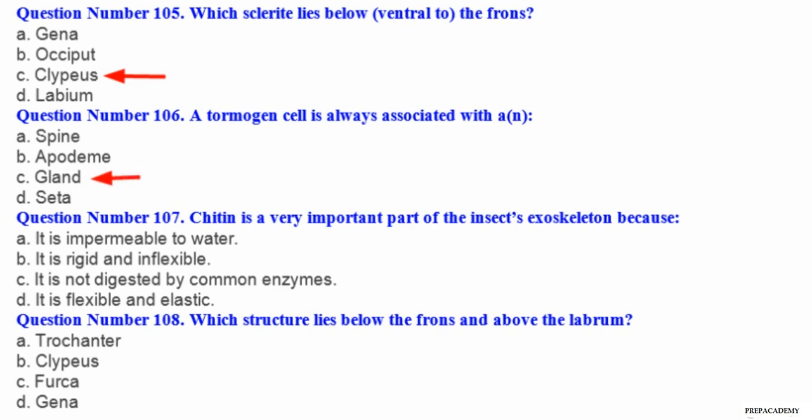Question number 107. Chitin is a very important part of the insect's exoskeleton because: A it is impermeable to water, B it is rigid and inflexible, C it is not digested by common enzymes, D it is flexible and elastic. Question number 108. Which structure lies below the frons and above the labrum? A trochanter, B clypeus, C furca, D gena.